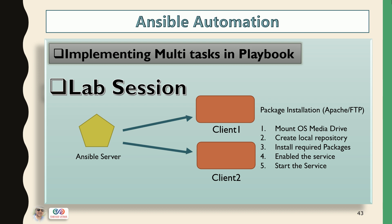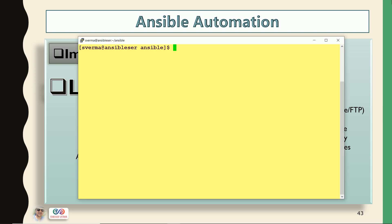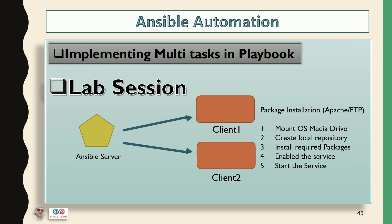So let me create a single playbook and in that single playbook I'm going to define all those tasks. This is my Ansible server and first let me show you what all the servers I have in a prod group — two client machines, that is client1 and client2.